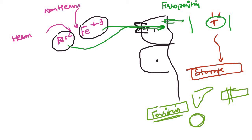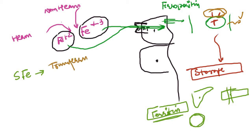There are certain parameters we need to understand in order to grasp the various abnormalities related to iron. The first is serum iron — that is the iron present in the blood or serum, not the stored form. Serum iron is the iron that is bound to transferrin, since that is naturally the iron present in the blood. The second parameter is ferritin — ferritin is the stored form of iron. If stored iron is more, ferritin will be more; if stored iron is less, ferritin will be less.